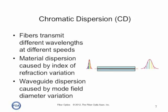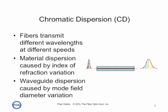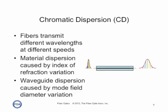Chromatic dispersion is when glass optical fibers transmit signals of different wavelengths at different speeds. The fact that redder light travels faster than blue light causes the pulse to widen as it goes down the fiber. There are two causes: material dispersion, caused by the index of refraction of the glass, and waveguide dispersion, caused by mode field diameter variation with wavelength.